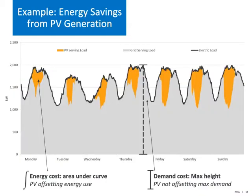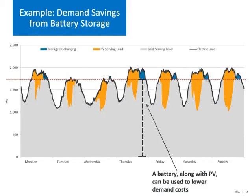We're now going to look at an example of how PV and storage can be used to offset energy and demand charges. Shown in black on this graph is the site's electrical load for one week — electricity use increases during the day and decreases at night. The PV system in orange is offsetting some electricity during the day when the sun is shining, reducing energy charges. The demand charge is determined by the maximum height of the load curve. In this example, the PV system is not generating electricity at the time of maximum demand, and therefore not offsetting demand charges. Unlike PV, storage can be dispatched in the evenings when the sun is no longer shining, and by adding a small storage system shown in blue, the site is able to reduce its demand charges.